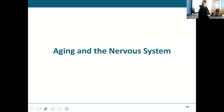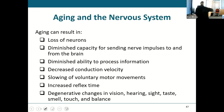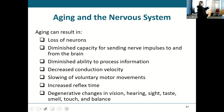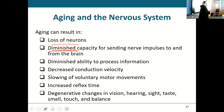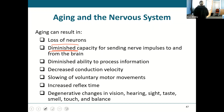Let's talk about aging and the nervous system — this is going to be quick. When you age, everything goes downhill. You're losing neurons, you have a diminished capacity for sending nerve impulses. Even the neurons that are there aren't as active as they used to be — impulses are taking longer to get there. It takes longer to process information, decreased conduction velocity, that action potential will be a little lower in peak, slow voluntary motor movement, and increased reflex time.